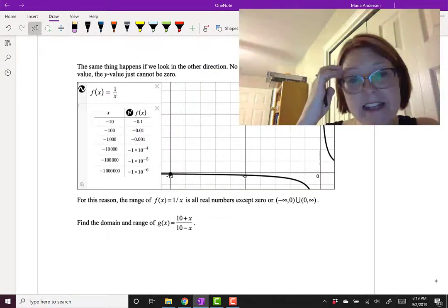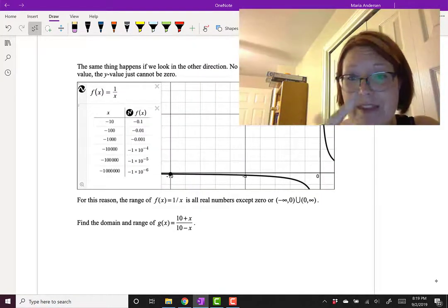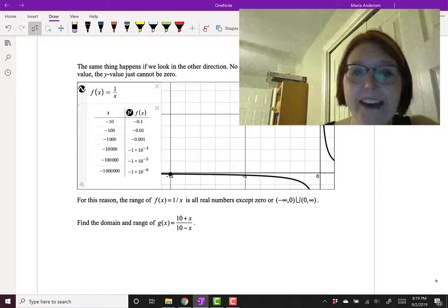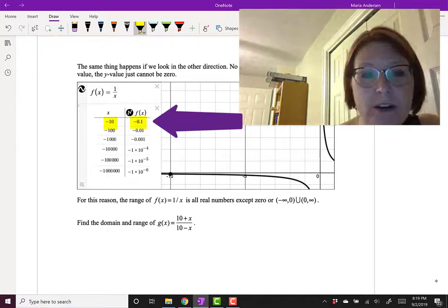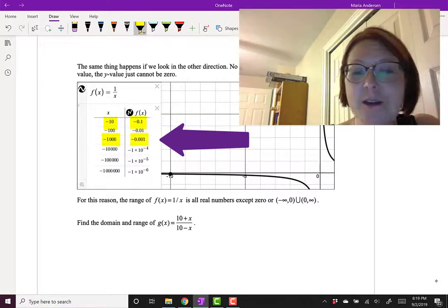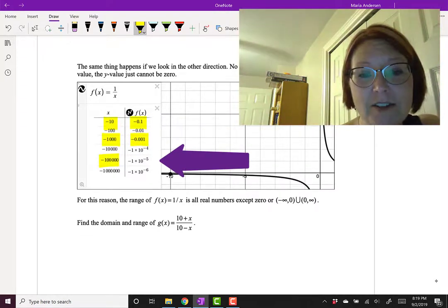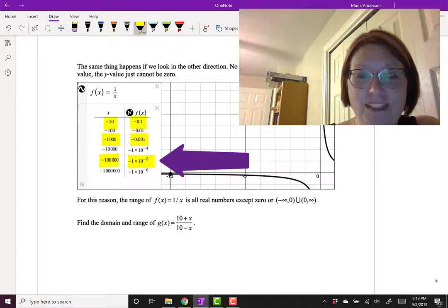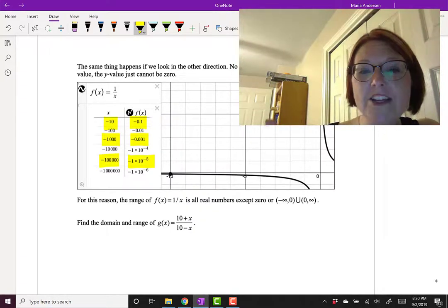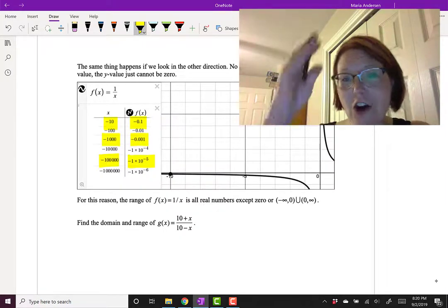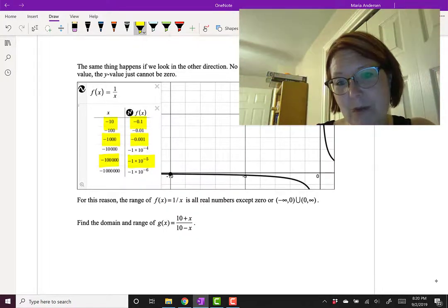If we go in the other direction on the y-axis, if we look negative, the exact same thing happens. No matter how big the negative x value, the y value again just can't be zero. If we plug in -10 for x, we get -0.1. If we plug in -1000 for x, we get -0.001. For -100,000, we get -0.00001. It just keeps getting smaller, but it's not going to get to zero. For this reason, we can see that the range is all real numbers for y except zero as well.